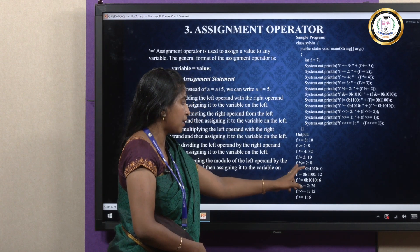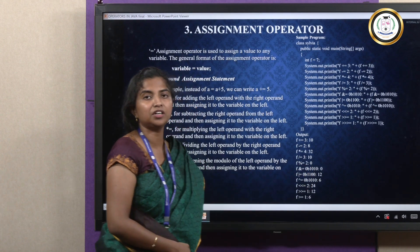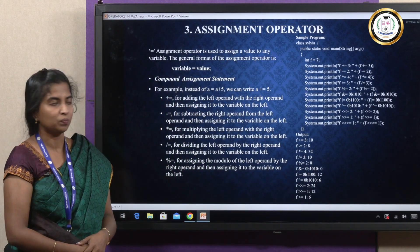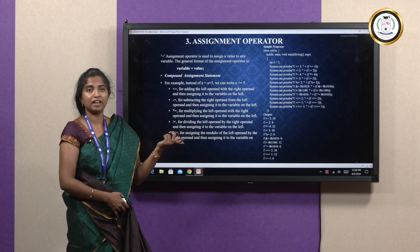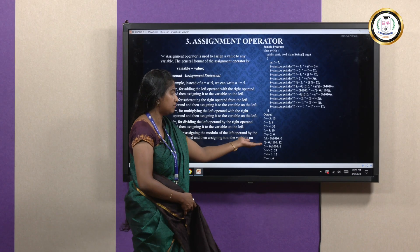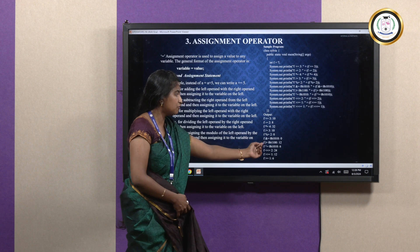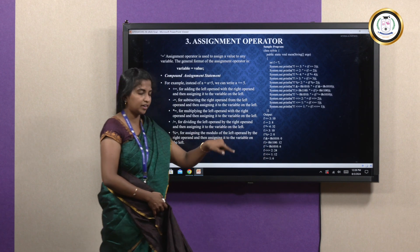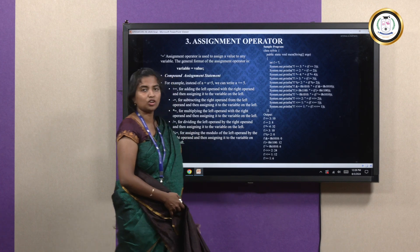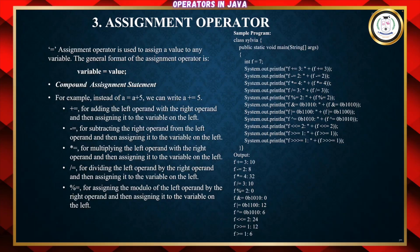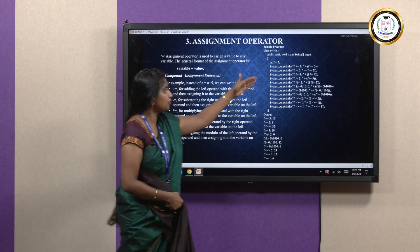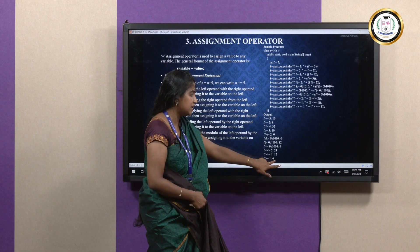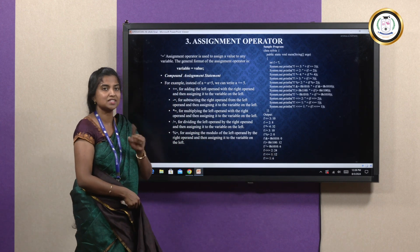For f &= , it will convert the value into a hexadecimal value and that value will get assigned. Similarly for the pipe operator, exponent, double greater than, double less than, and less than or equal to — the value will be 1 to 6. After computing all these calculations, finally the value of f stored in memory will be 6.